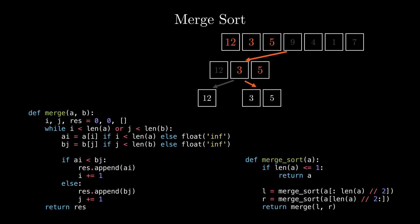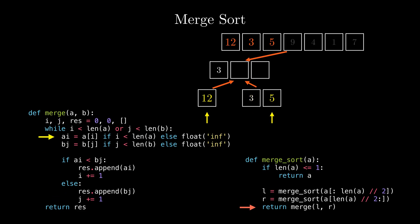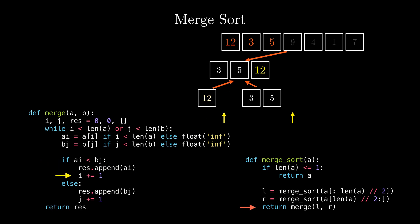The algorithm then moves on to merging the single-element array [12] with the newly created array [3, 5]. We call the merge function on those two arrays. In the merge function we initialize pointers and the result array and enter the while loop. On the first iteration, ai is 12 and bj is 3, so we add 3 to the result. On the second, ai is 12 and bj is 5, so we add 5. On the third, ai is 12 and bj is infinity, so we add 12. We then stop the loop and return the resulting array [3, 5, 12].